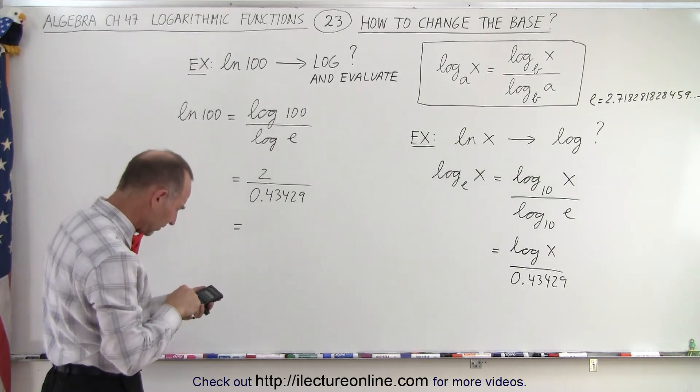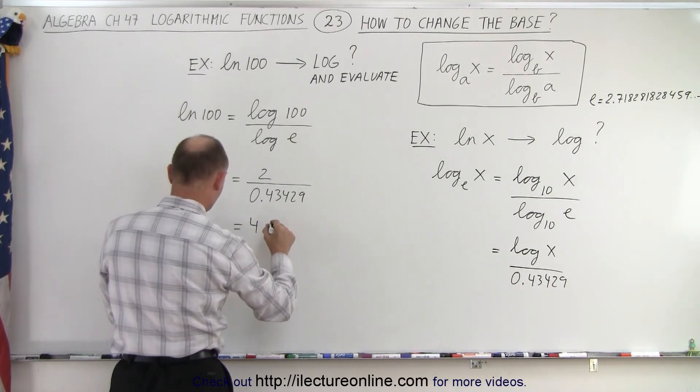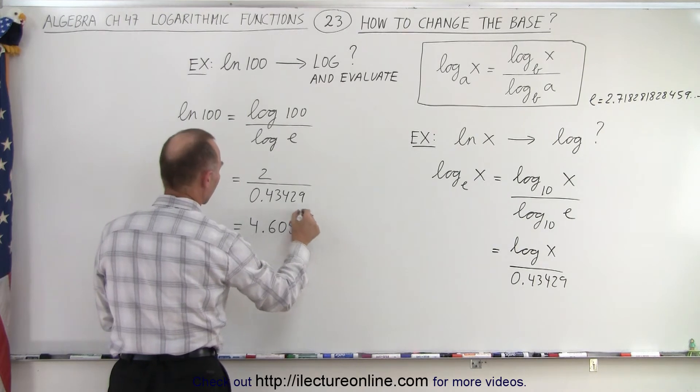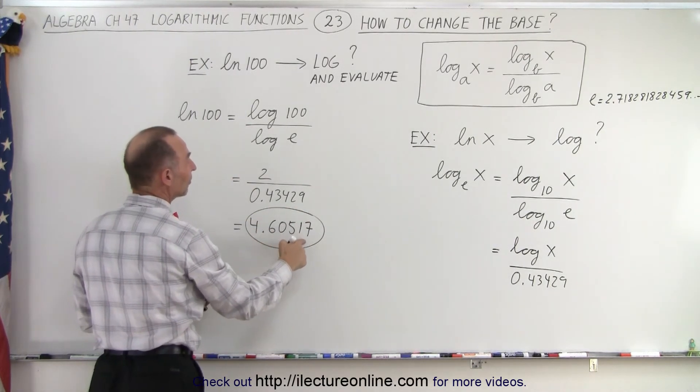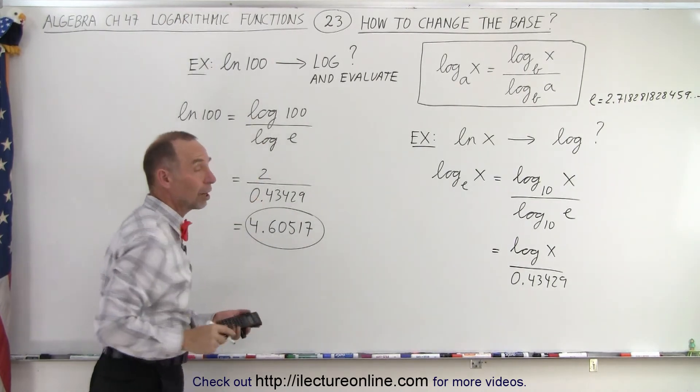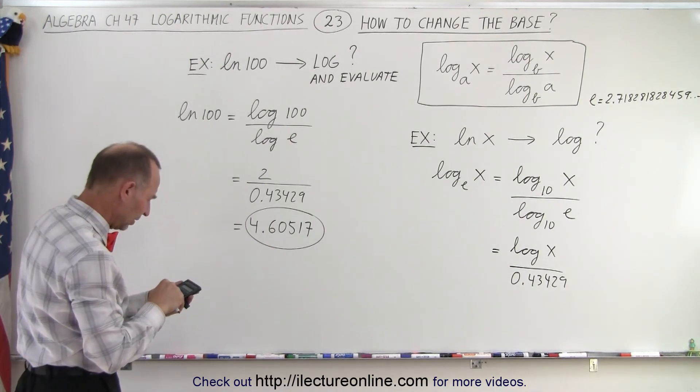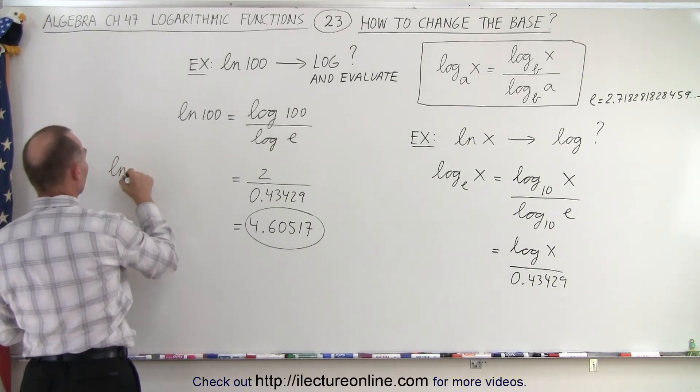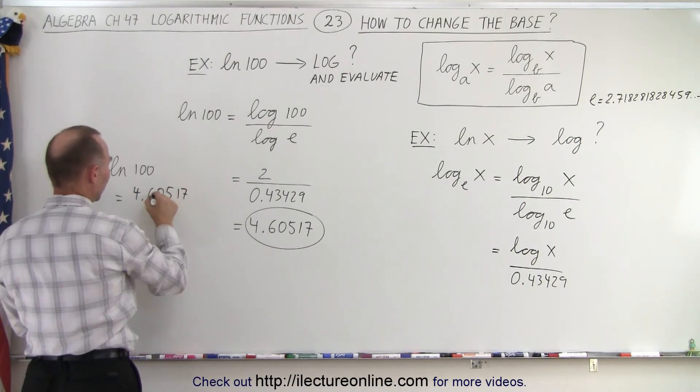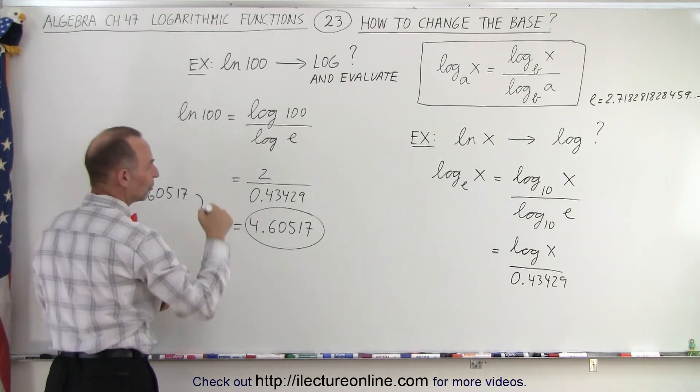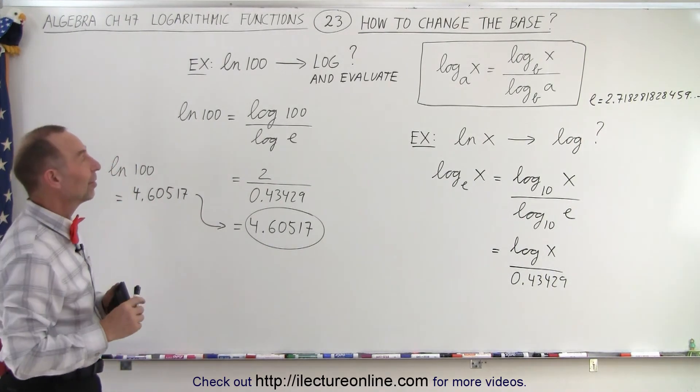Okay, take the inverse of that, times 2 equals, and we get 4.60517. All right, so that is, the natural log of 100 is 4.60517, by converting it from the natural log to the common log. But, let's now take the natural log of 100, because most calculators can do that as well. 100, take the natural log, and sure enough, the natural log of 100 is equal to 4.60517. And notice that it is equal to what we got there, to make sure we did it correctly.